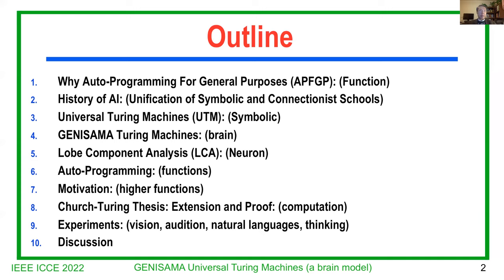Then I talked about experiments that include the three bottlenecks of AI: vision, audition, and natural languages. Number four is something that's open, and many people in AI still don't understand what that is — it's called the thinking model. So one, two, three are bottleneck problems for AI that many people are aware of. Number four is new. And I followed this subject with some discussions.